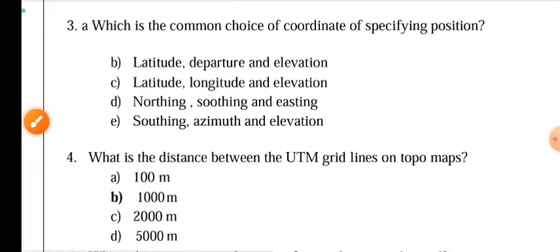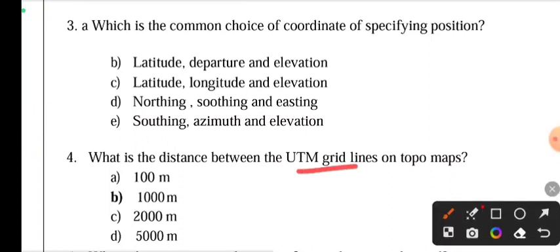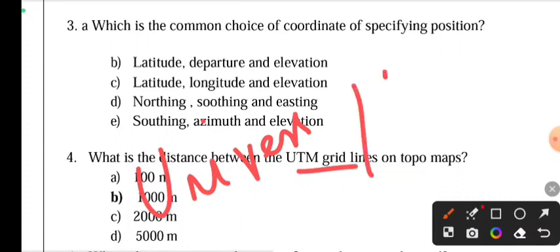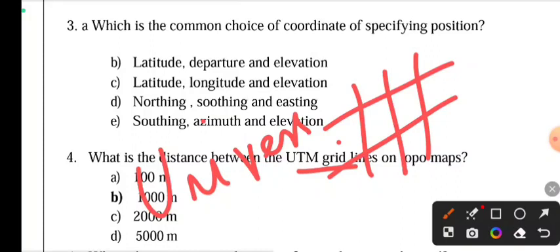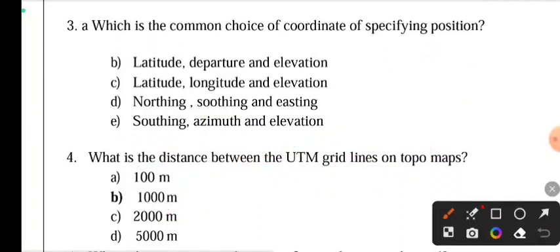Fourth question: what is the distance between UTM gridlines on maps? UTM stands for Universal Transverse Mercator, which is used for military purposes. The gridline distance is denoted in DDM — degree decimal minutes format.